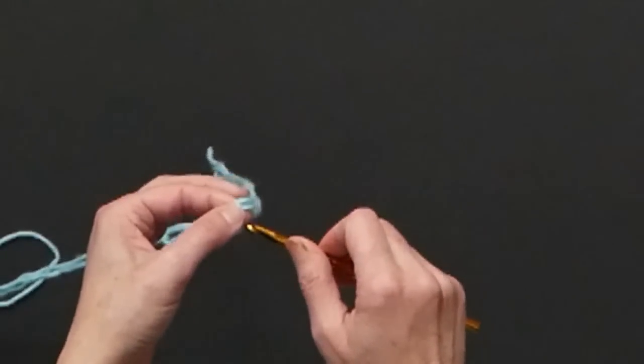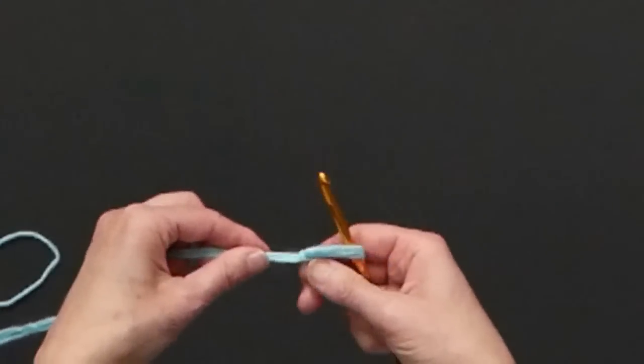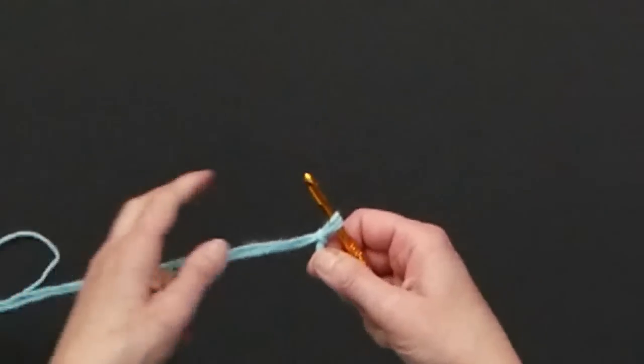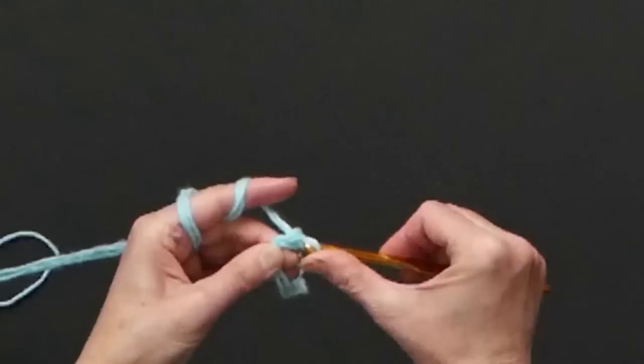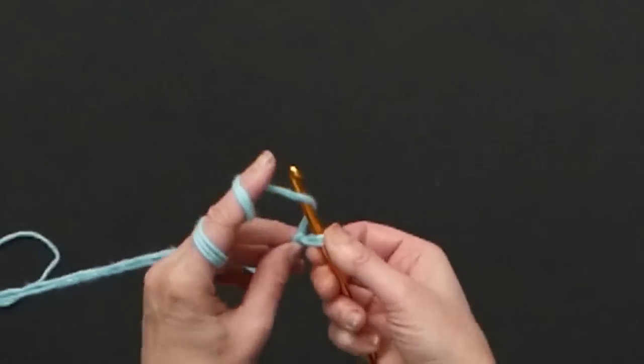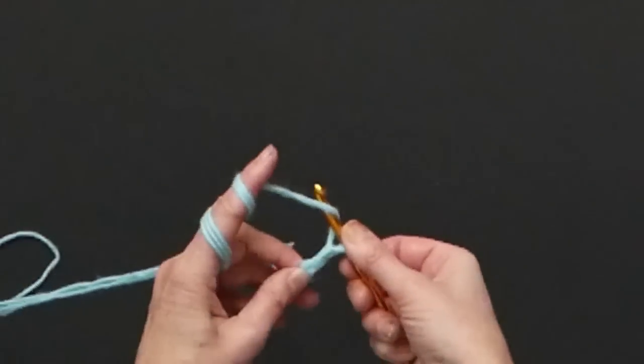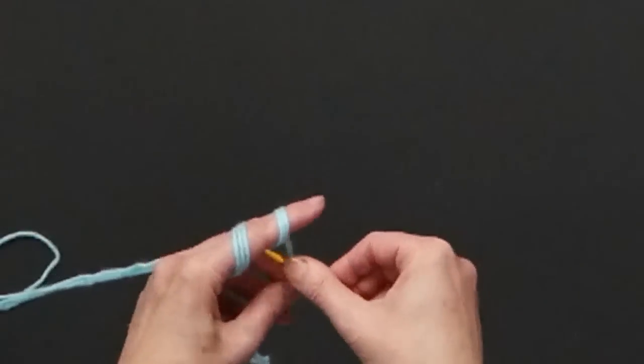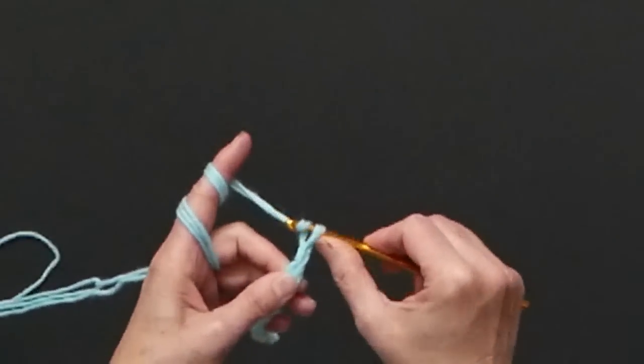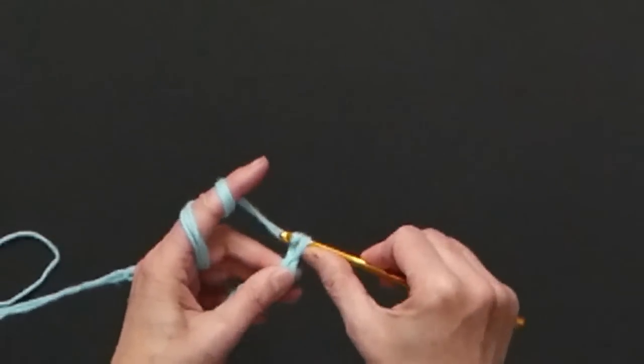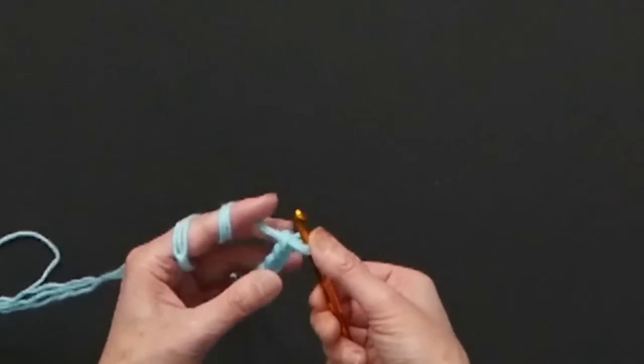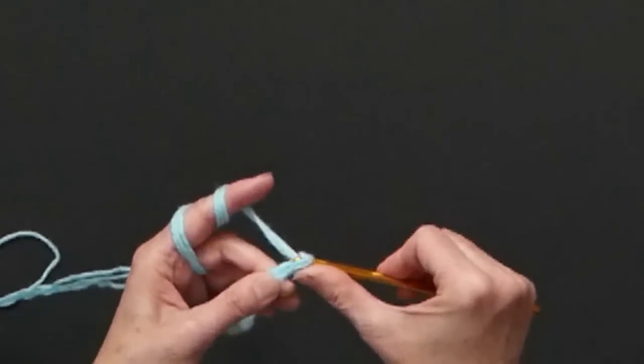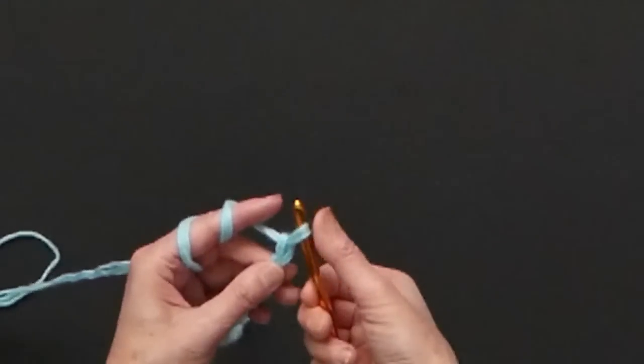Then you insert your hook into your initial knot and you just keep crocheting with all three strands. Here I am crocheting chain and I'm always making sure that I grab three strands and pull it through three strands in that loop.